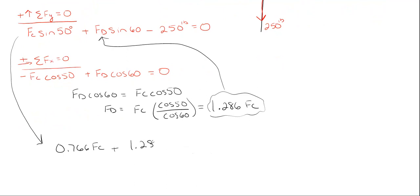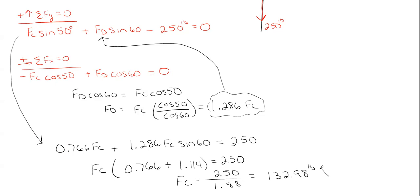So my y equation now becomes this where I have the sine of 50 is 0.766 times FC plus my FD, which now is 1.286 FC times the sine of 60. And I'm going to take the 250 to the opposite side, so equal to a positive 250. So I'm going to pull FC out of both of these portions here, so the FC multiplied by 0.766 plus 1.286 times the sine of 60 becomes 1.114 is equal to 250. So that means that FC is equal to 250 divided by 1.88. And this gives me an FC value of 132.98 pounds in that upward left direction.